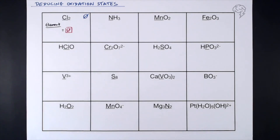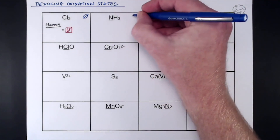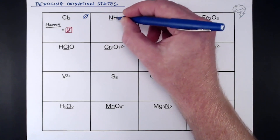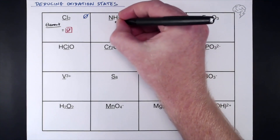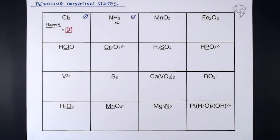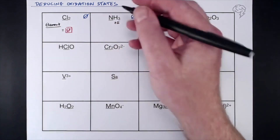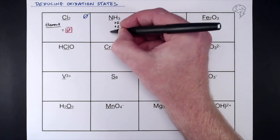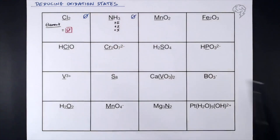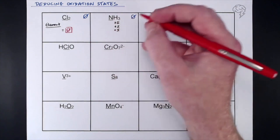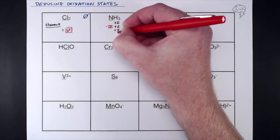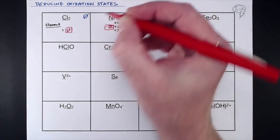Next up, ammonia — the overall oxidation state is zero because there's no charge. We need to find the oxidation state of nitrogen. Hydrogen in any compound has a +1 oxidation state — it's not with a metal here, it's with nitrogen — and we've got three of them, so three × (+1). Nitrogen must counteract those to bring the total back to zero, so nitrogen must be −3, because −3 cancels out the three +1s.